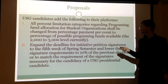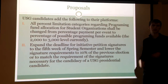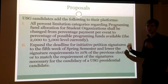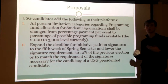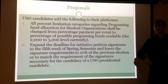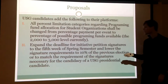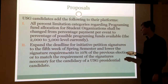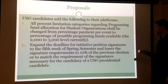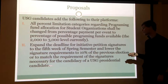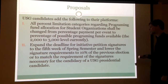I'm going to start with the proposal section and then go back and lead up to why I'm proposing this measure to be brought up as a block vote for the USG candidates to get upon their platforms. The second proposal is: expand the deadline for initiative petition signatures to the fifth week of spring semester and lower the signature requirements to 10% of the previous election, or to match the requirement of signatures necessary for the candidacy of the USG presidential candidate.